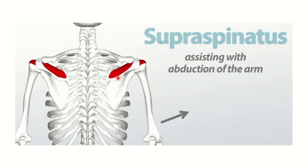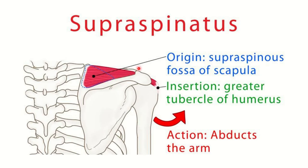The supraspinatus is inserted into the greater tubercle of the humerus and is responsible for initiating abduction of the shoulder joint. In this picture we can see the details of the supraspinatus muscle — it originates from the supraspinatus fossa of the scapula.